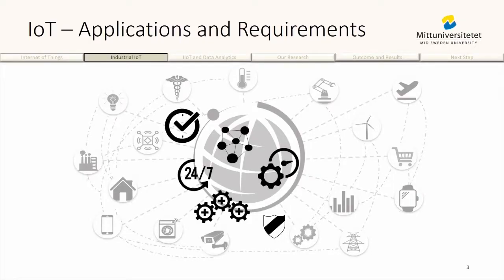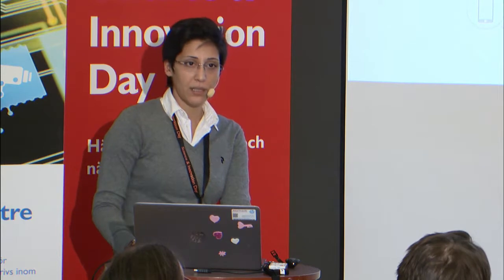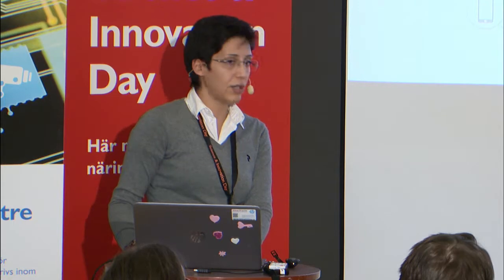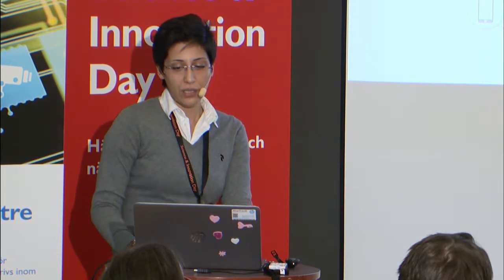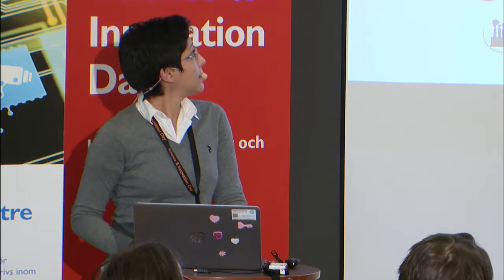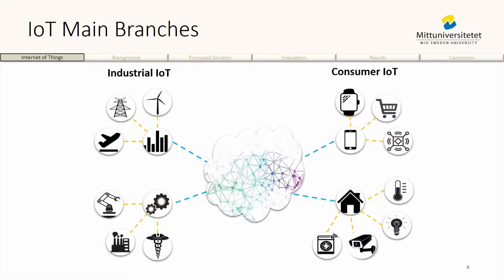Based on requirements for different applications, IoT can be divided into different scenarios with reliability requirements, real-time guarantees, security, and many more. For example, a few degrees of temperature fluctuation in a home heating system can be tolerable, but the same problem in a health monitoring system could mean a patient's condition becoming critical. This division usually gives us two branches: consumer IoT and industrial IoT.